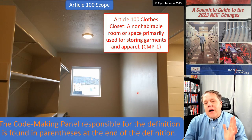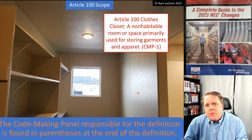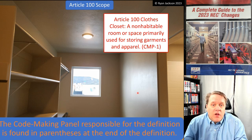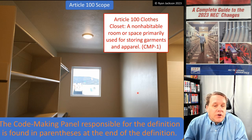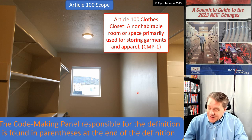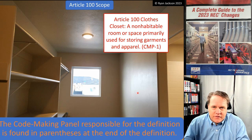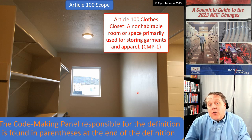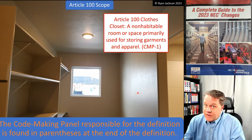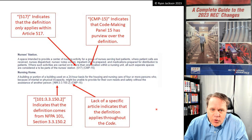Also found in parentheses at the end of each definition — since around 2005 or 2008 — is the code making panel responsible for that definition. For example, the definition of 'clothes closet' ends with 'CMP-1,' meaning Code Making Panel 1 has ownership. Unless you're on a code making panel or deep in the code change process, you can disregard this part. It matters for knowing who to contact about a definition, but not for everyday code application.